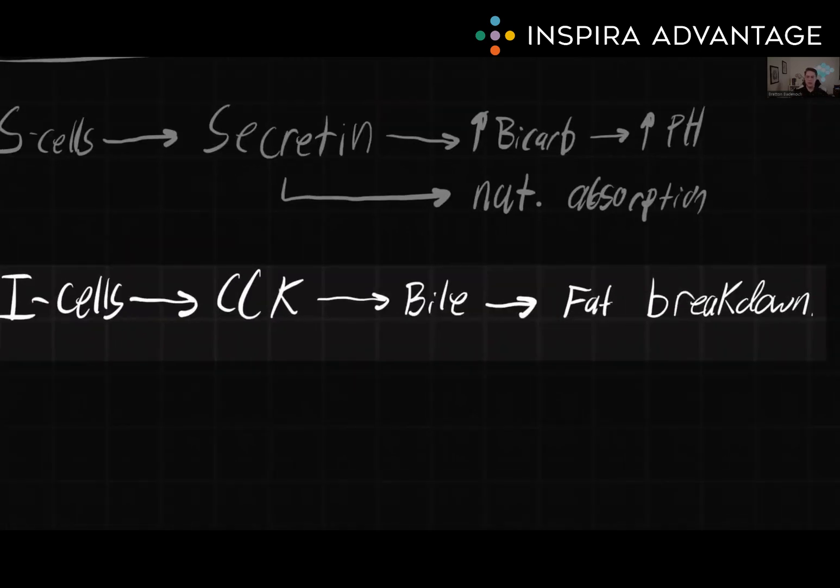Cholecystokinin, or CCK, is a hormone that is produced by I cells in the small intestines. It stimulates the release of bile from the gallbladder, which helps to emulsify fats, thereby making it easier for the fat to be broken down. CCK also slows the emptying of the stomach and increases the release of enzymes from the pancreas, which aid in the breakdown of fats and proteins.